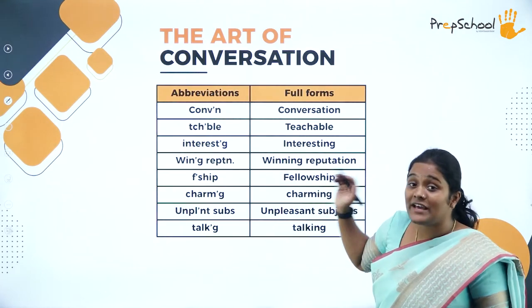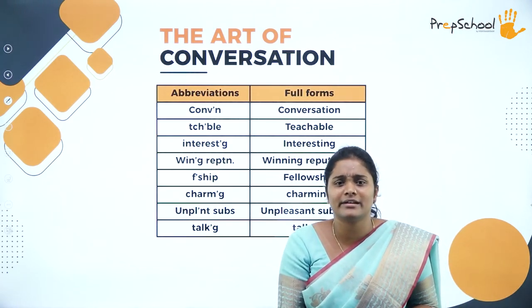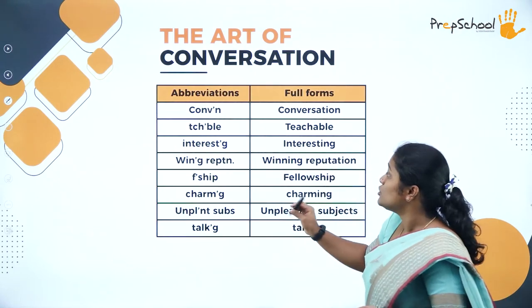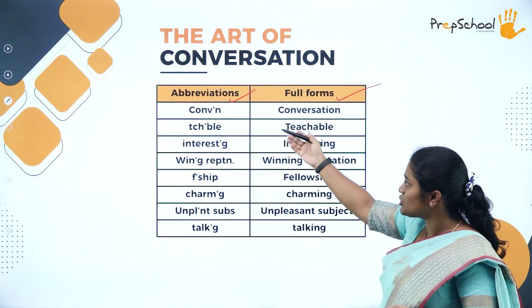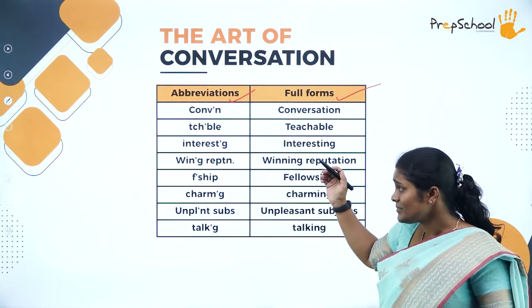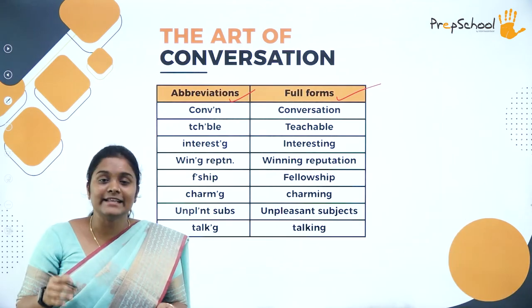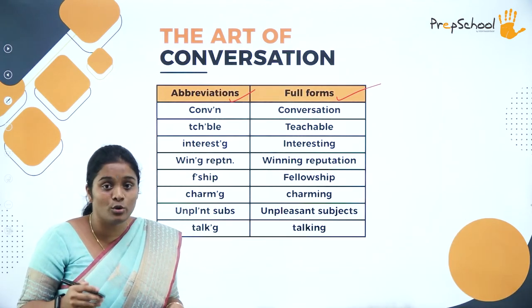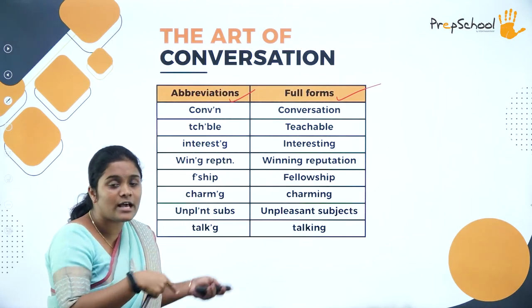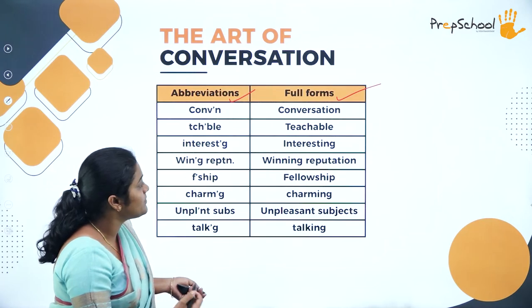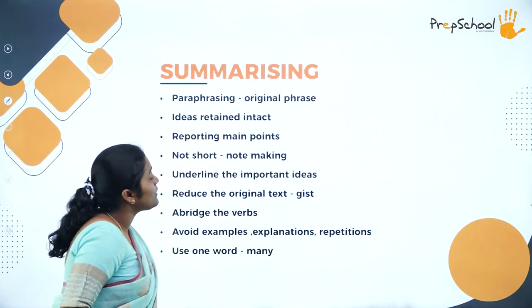Write the abbreviation column with: conversation, teachable, interesting, winning reputation, fellowship, charming, unpleasant subjects, talking — and the full forms alongside. Retain the main sound when using abbreviations in your note, but write the whole word in the full forms column. If there were two words together — like 'unpleasant subjects' — write the complete phrase in the full forms. That was all about note-making. I hope you understood our session covering theory and practical — what, why, when, where, and how.